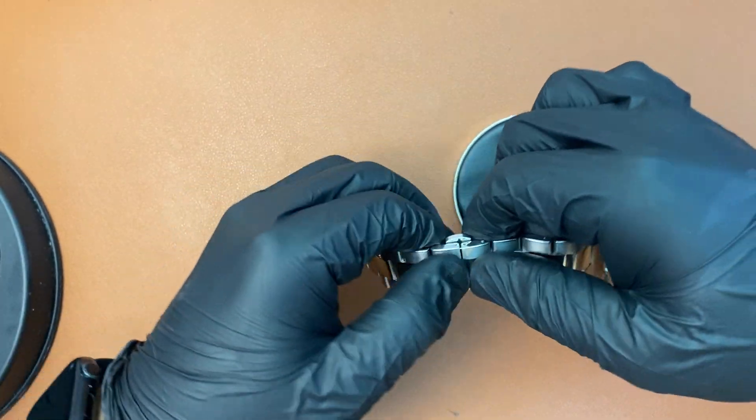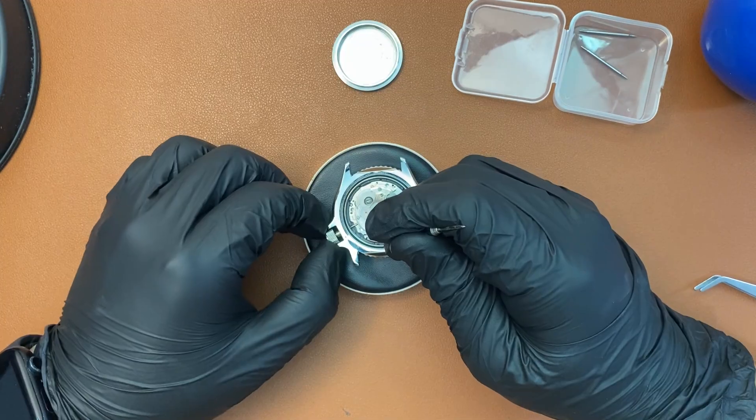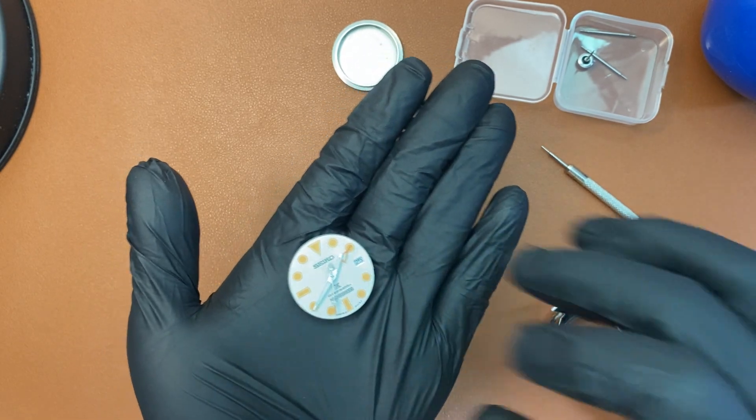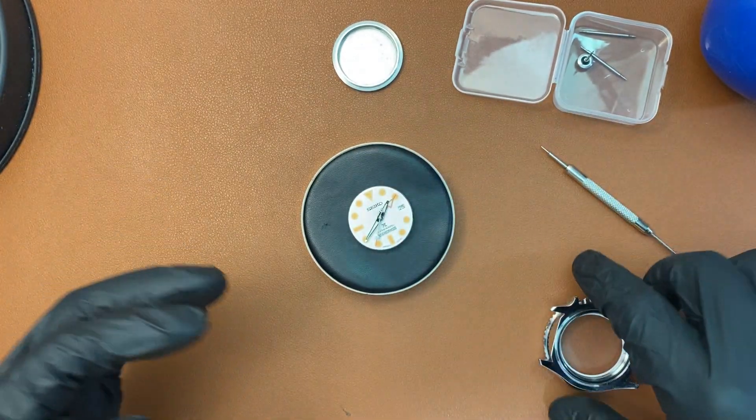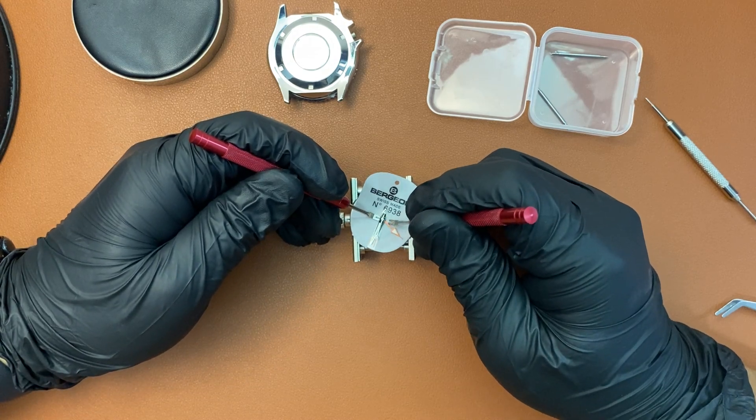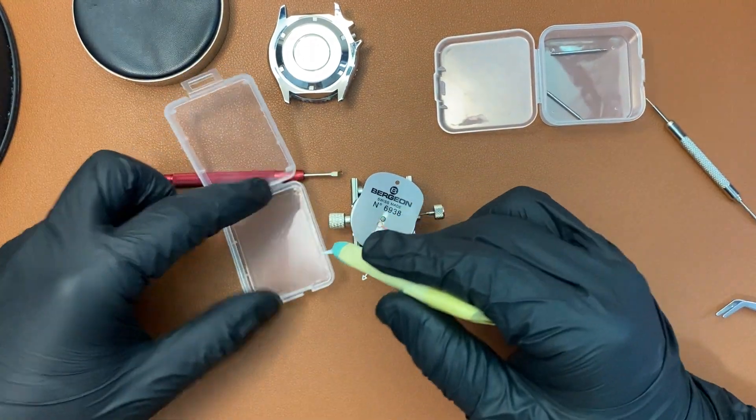Put it somewhere safe, open the case, remove the stem, and pop the movement out just like this. What's next is to actually remove the hands carefully not to scratch anything. There we go, pick them out and store them somewhere safe.